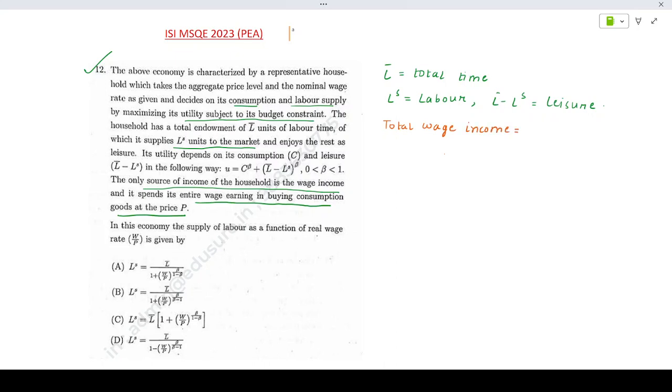The nominal wage in the market is W. He gives LS units of labor. Total wage income is this. What is his total expenditure?